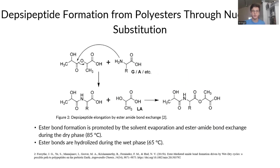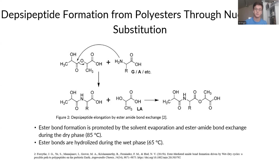DEPS peptide formation occurs through a reaction mechanism called nucleophilic substitution. Here in this example on the left, we have our ester bond in the polyester molecule, and on the right, we have our amino acid. The amino group of the amino acid attacks the ester bond, disrupts it, and eventually replaces it — and what we get is a peptide bond.